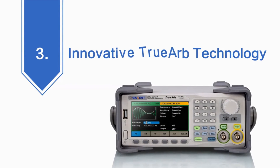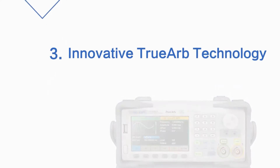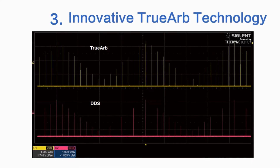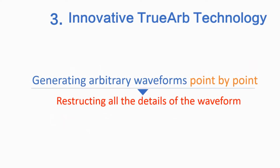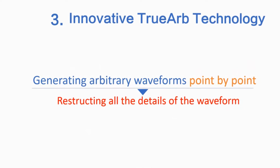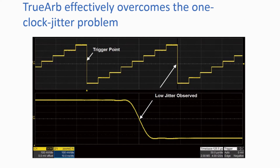With the SDG2000X's innovative TruArb technology, it can generate arbitrary waveforms point by point, never skipping any point, so that it can reconstruct all the details of the waveform as defined. TruArb effectively overcomes the defect that DDS may cause with the one clock jitter in arbitrary waveforms.